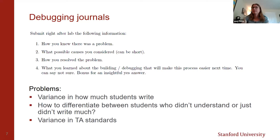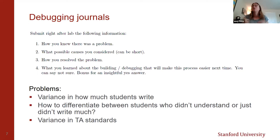We did learn some interesting things from the journals. Probably the most interesting was the number of students who wrote down what they learned in terms of realms of where things can go wrong. For example, they might write 'individual components can be broken when they come from China,' or 'it can be user error — I didn't know how to use the oscilloscope.' They always automatically assumed they had miswired something, and they were slowly expanding their ideas to include these other realms of possibility.